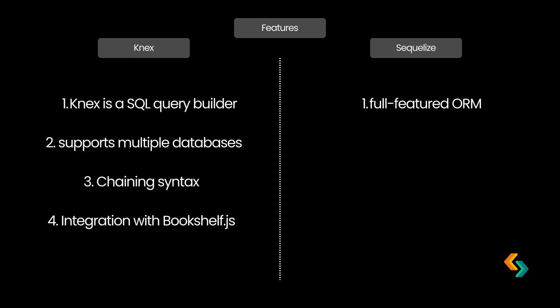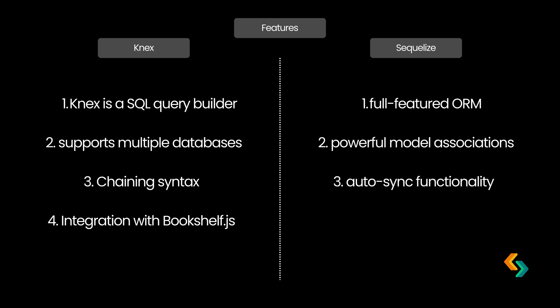Sequelize is a full-featured ORM that represents tables as models. If you're comfortable with JavaScript objects, Sequelize makes it simple to create, retrieve, and manage records without writing SQL. Sequelize has powerful model associations — you can define belongs-to, has-many, and many-to-many relationships in just a few lines. For complex apps with relationships across multiple tables, Sequelize's model-based approach can be a huge time saver. With auto-sync functionality, Sequelize can automatically synchronize models to tables — you define the model, and Sequelize ensures the table matches, saving you time on migrations. Plus, Sequelize has strong support for hooks and validations, enabling you to define specific behaviors before or after actions, like before a record is saved or after it's deleted.